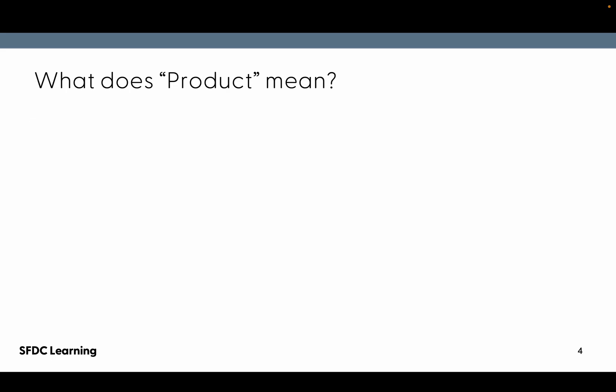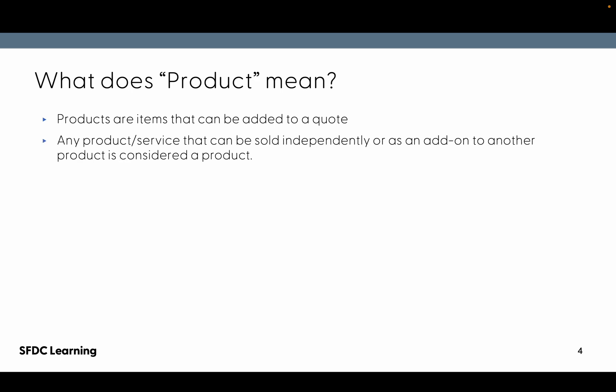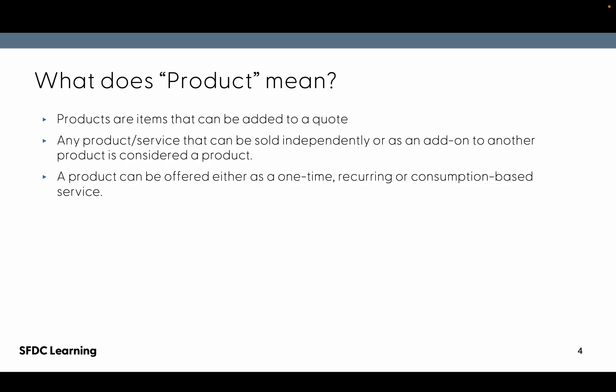Now, what does product mean? Products are items that can be added to a quote. Any product or service that can be sold independently or as an add-on to another product is considered a product. A product can be offered either as a one-time, recurring, or consumption-based service.